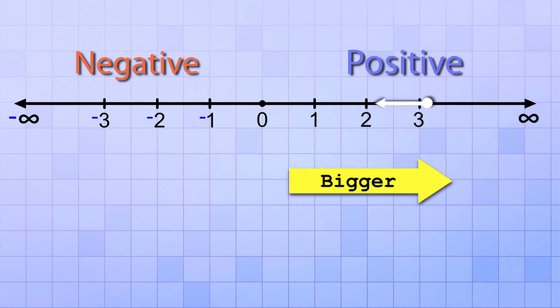But what if we go in the opposite direction instead, to the left? As we go to the left, the numbers get smaller and smaller. 2 is less than 3, 1 is less than 2, and 0 is less than 1.